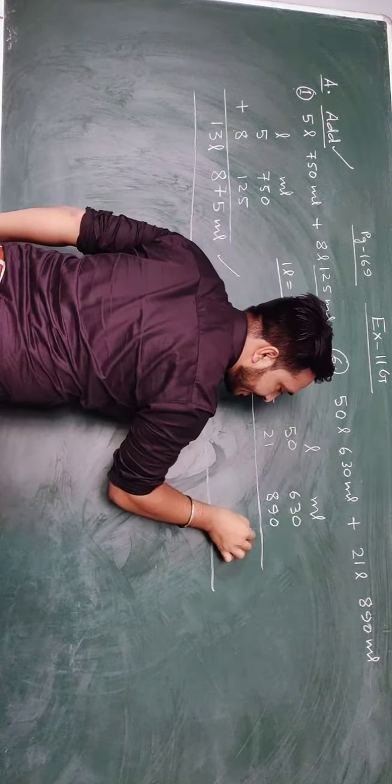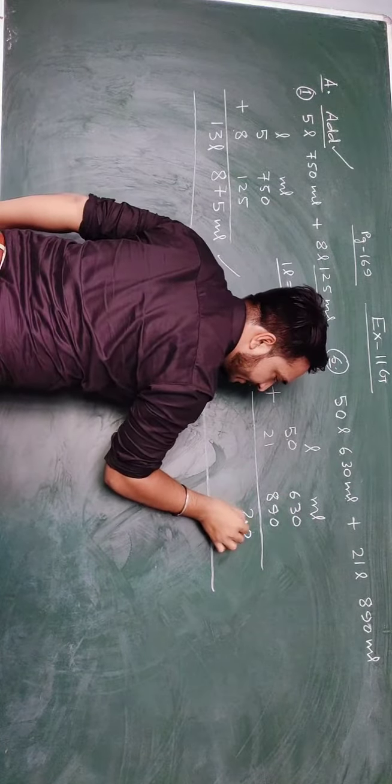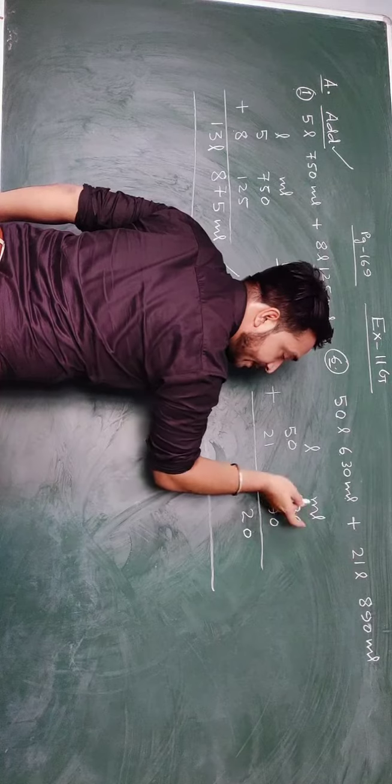So let's add them. 0 plus 0 is 0, 9 plus 3 is 12 and 8 plus 6 is 14, plus 1 is 15.